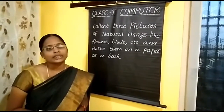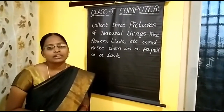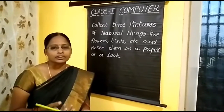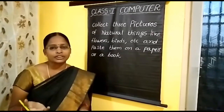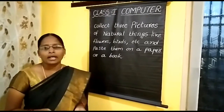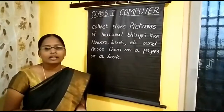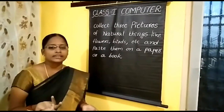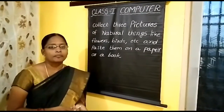What are natural things? Natural things are like flowers, birds, trees, etc. And man-made things are fridge, washing machine, AC, etc.